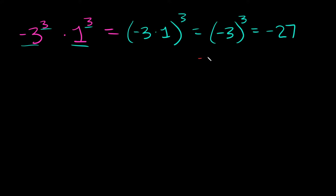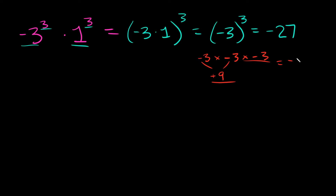Just to show how we get there: negative 3 times negative 3 times negative 3. Negative 3 times negative 3 is positive 9, and positive 9 times negative 3 — a positive times a negative is a negative — so 9 times 3 is 27, giving us negative 27.